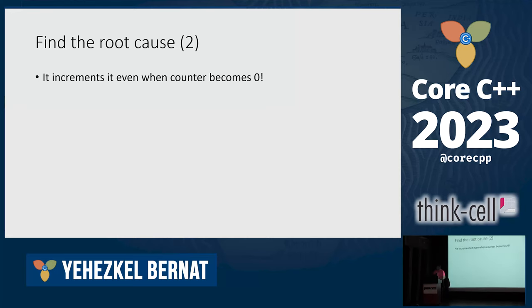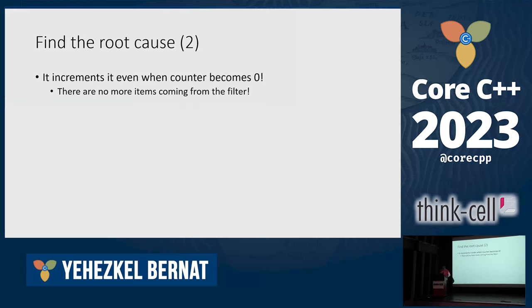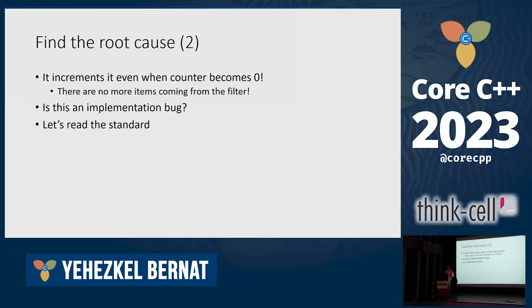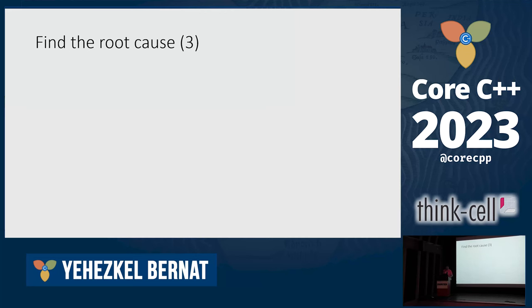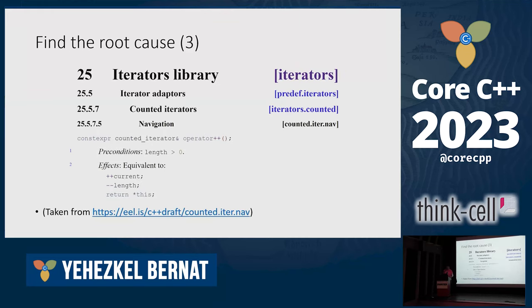Because the iterator is a filtered iterator coming from the filter view, it tries to find the next number with the truncatable prime property and doesn't find any — so it runs forever, basically until overflow. The question was: maybe it's an implementation bug? But looking at the standard, the definition is given in code, and the code says exactly what the implementation did. So it's apparently a bug in the standard. What can we do now?